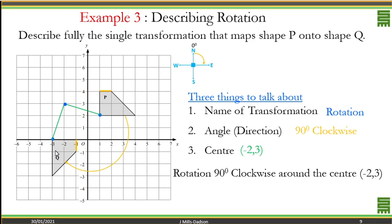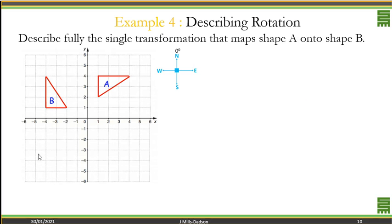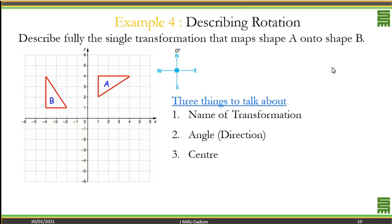Put in a sentence form. Rotation 90 degrees clockwise around the center negative 2 and 3. Let's do one final example on description. A to B. Three things to talk about. First is rotation.